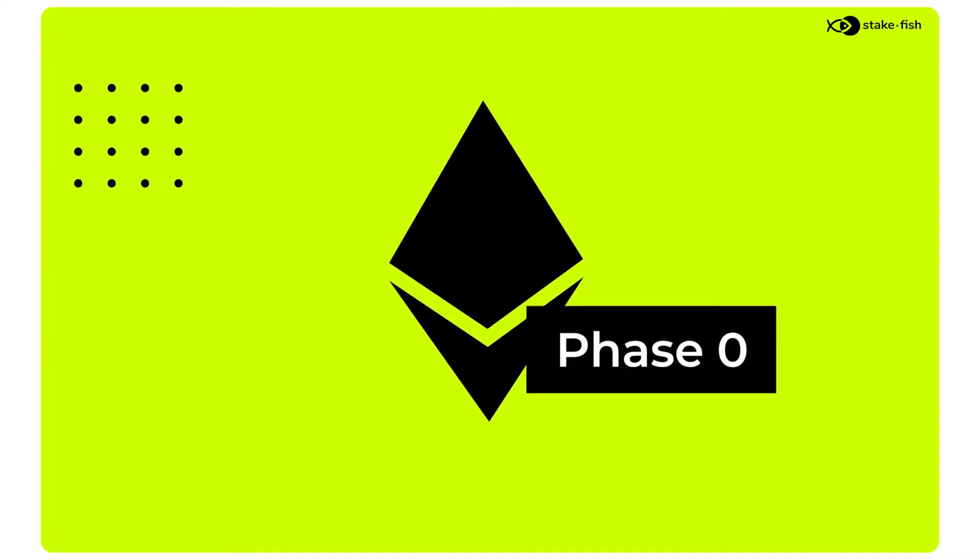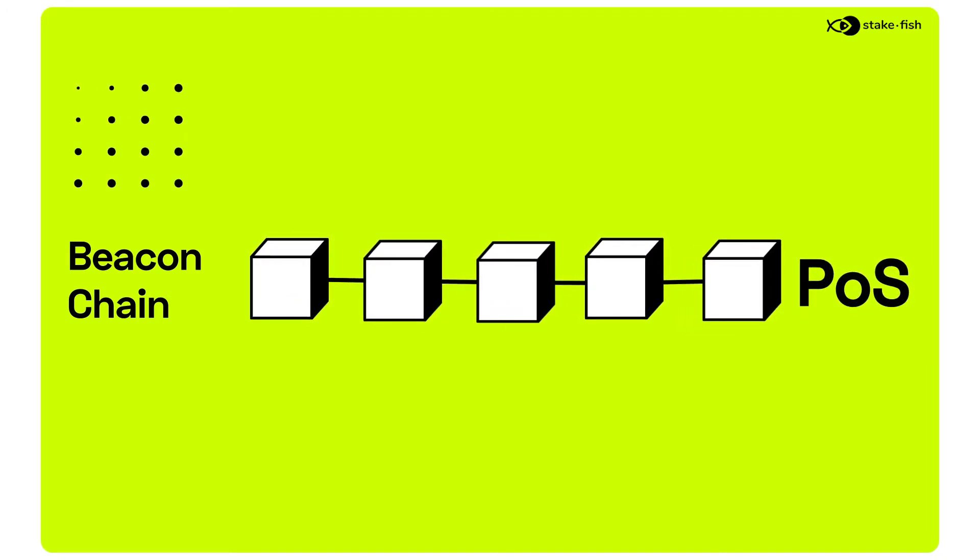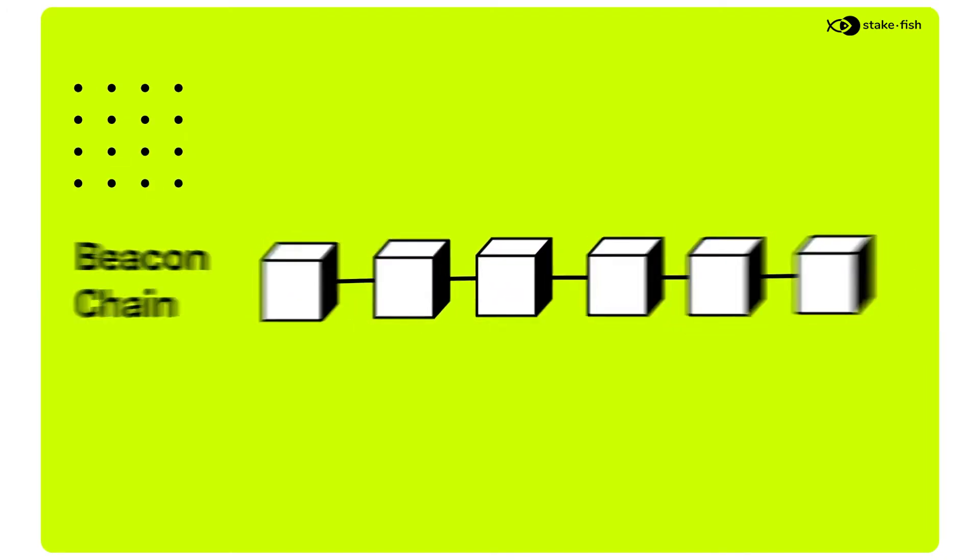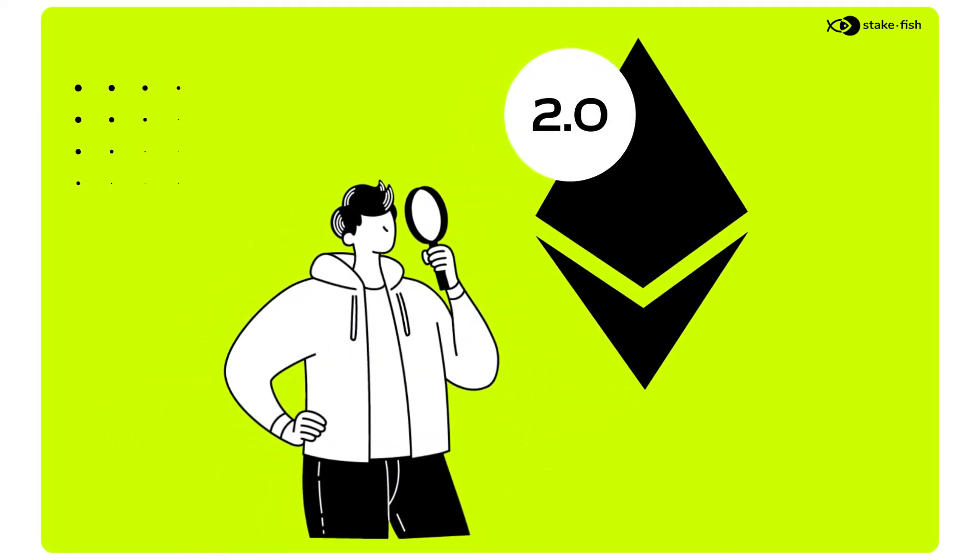Phase 0 marks the launch of the Bitcoin chain, which will run using Proof-of-Stake to coordinate block creation and finalization. Let's take a look into some key concepts of Ethereum 2.0 Proof-of-Stake.